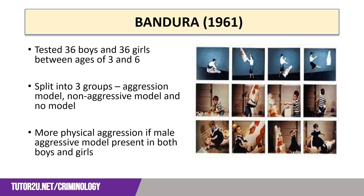Bandura then instructed the children to play in the room where the Bobo Doll was present, and found that there was more physical aggression from the children towards the doll if they had observed an aggressive role model interacting with the Bobo Doll in the first place. Whilst both males and females acted aggressively if there had been a male role model present in the observation, girls displayed less physical anger if a female model had been observed.